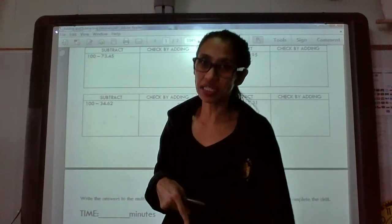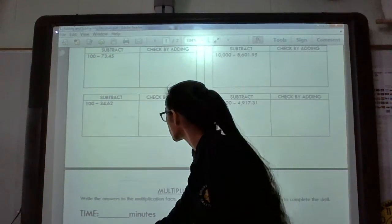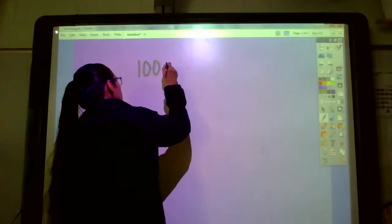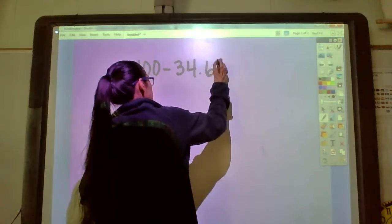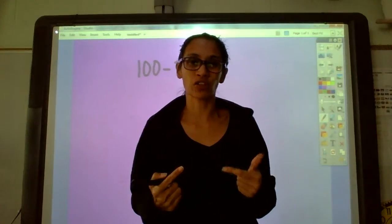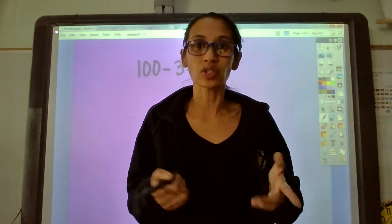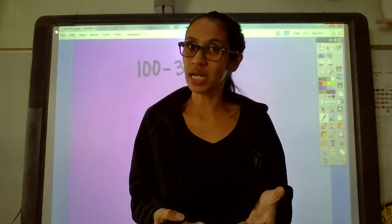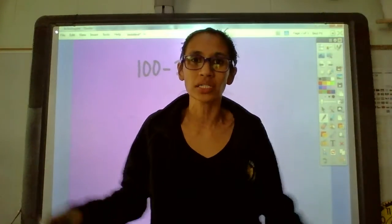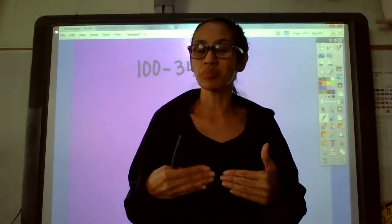That one says 100 minus 34.62. Let me write it down: 100 minus 34.62. Let me just go back and double check to make sure I wrote it down correctly. Whenever you write problems down, always double check to make sure you wrote the problem correctly because sometimes you work it out right but get the answer wrong because you didn't even write the problem down correctly.